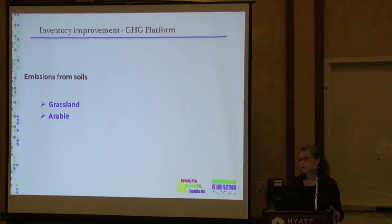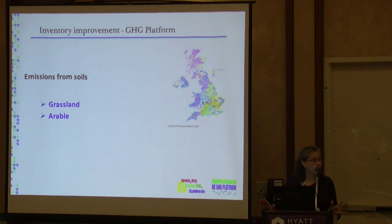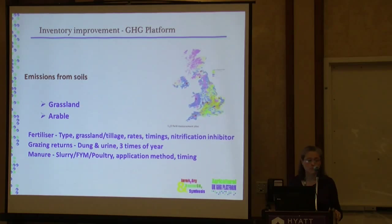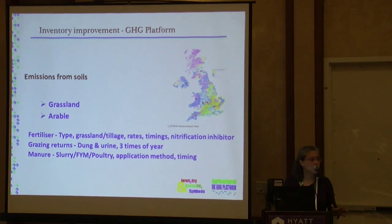A series of sampling sites were identified, trying to cover a range of climate and soil types. Nine sampling sites were selected. A series of fertilizer types were assessed — different rates of nitrogen, different timings, application of nitrification inhibitors, simulating grazing by applying dung and urine to soil, as well as applying manure. This is quite a large undertaking that we had to plan as best as we could.